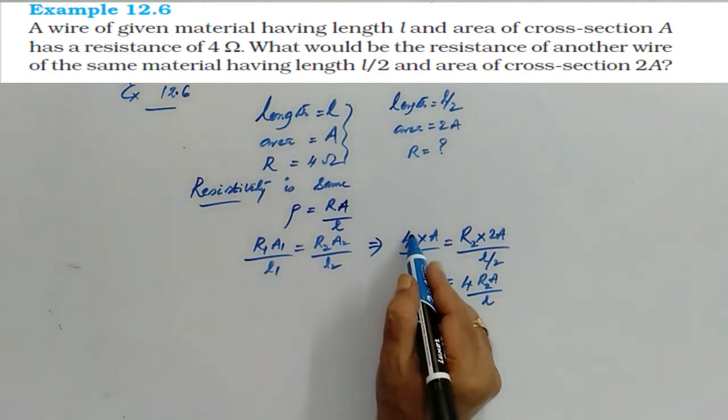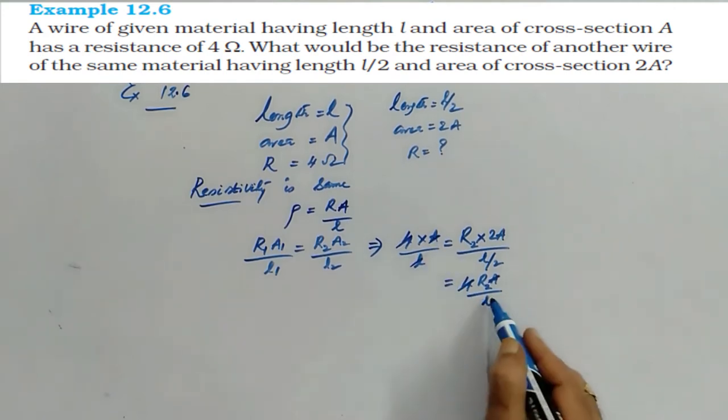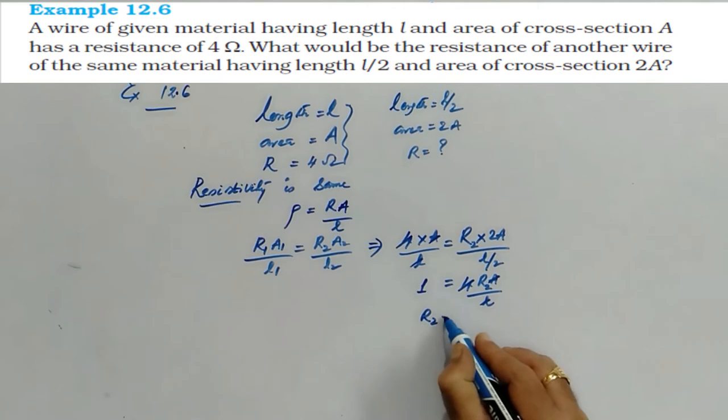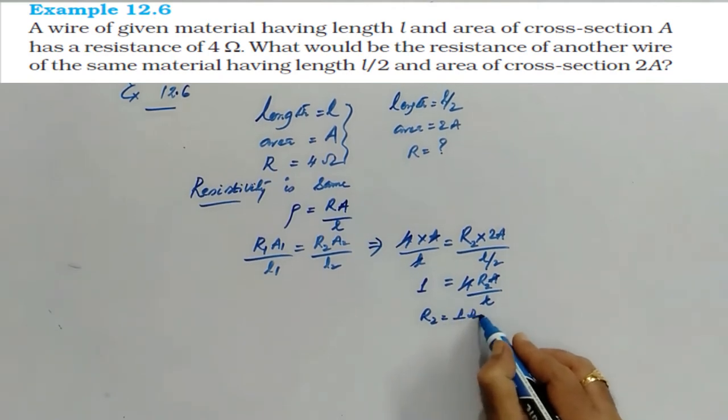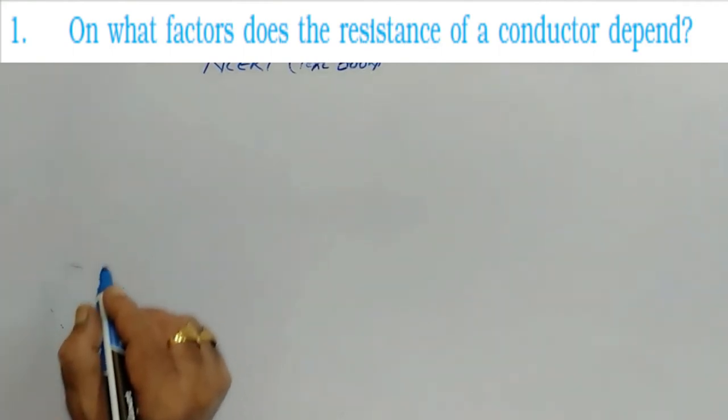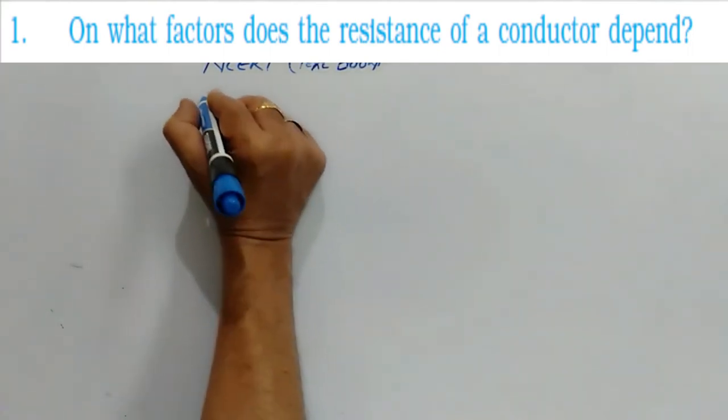This 2 will go to numerator so 2 into 2, 4. Our aim is to calculate R2. So this 4, this A, this L can be cancelled, so left out is 1 ohm.